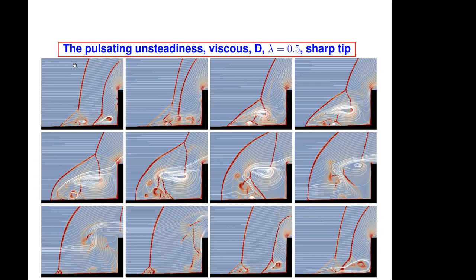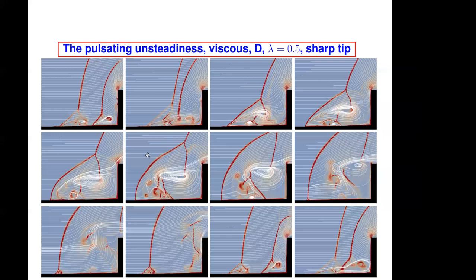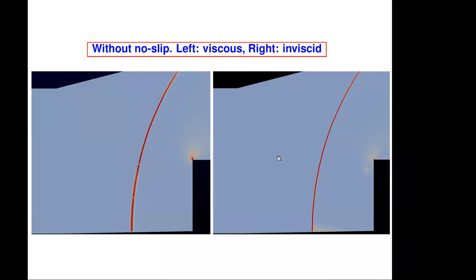Now, let's see what happens if the flow is inviscid. We can do two things because the generation of vorticity happens because of the no slip condition. We can remove this no slip condition and maintain viscosity and heat conduction, or we can remove the no slip condition and remove viscosity and heat conduction. Both are done in this slide. And we see that on the left we have without no slip and viscous, and on the right we have without no slip and inviscid. And these two are the same and steady. So what causes the whole unsteadiness is the no slip condition.